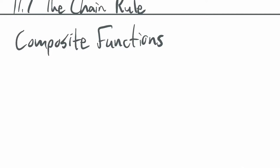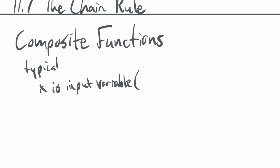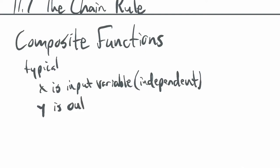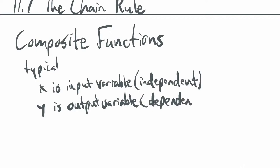For most functions in this course, x is the independent variable — the input variable — and y is the output variable, the dependent variable. It depends upon what you plug in for x.